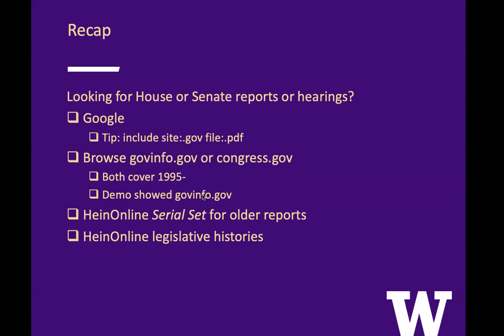To recap: if you're looking for House or Senate reports or hearings, you can use Google — that's especially effective for 1995 to present. In Google, you can require that the site be .gov and that the file be .pdf. In addition to Google, you can browse govinfo.gov or congress.gov — both cover 1995 to present. Our demo showed govinfo.gov, but you could look at congress.gov as well. For older reports, use the serial set in HeinOnline. For reports, hearings, and a variety of other materials, use HeinOnline legislative histories.